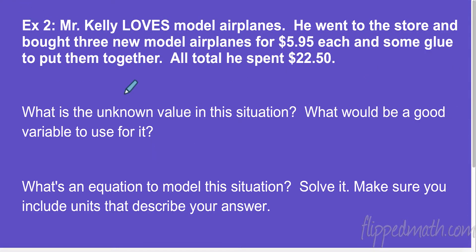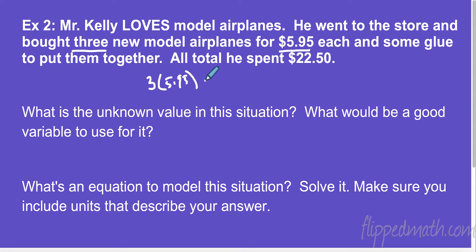All right, here we go — Mr. Kelly. You're going to get to meet Mr. Kelly soon. You guys are going to love him, he's the best. Mr. Kelly loves model airplanes. He went to the store and bought three new model airplanes for $5.95 each. So three times $5.95 — that's how much he paid for that. We can multiply those together and we get $17.85.